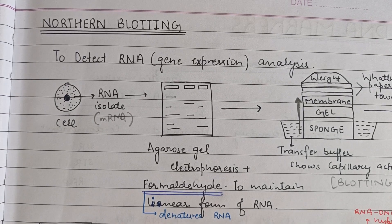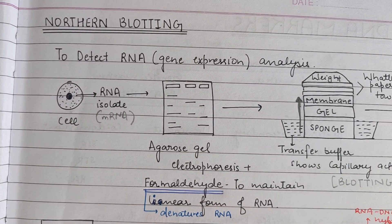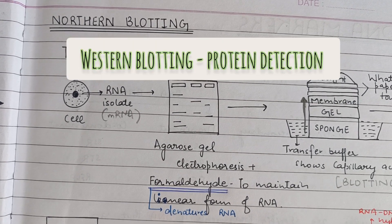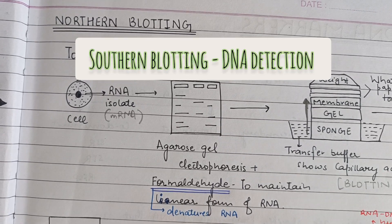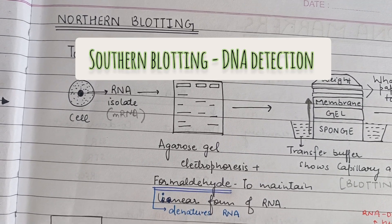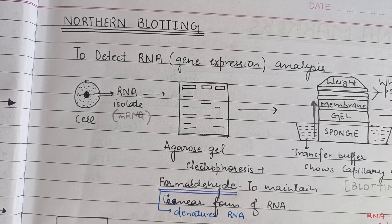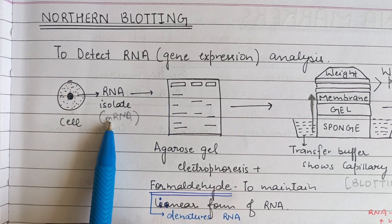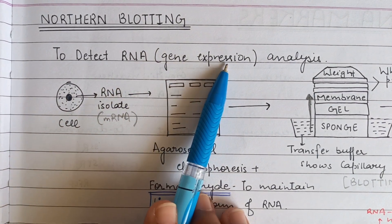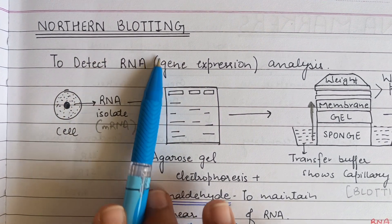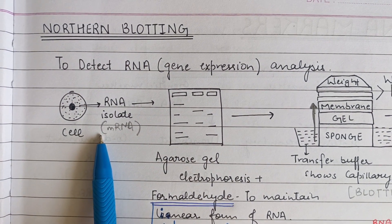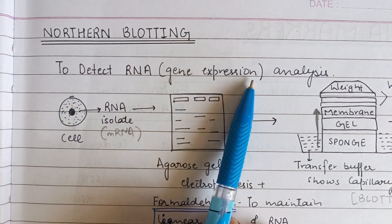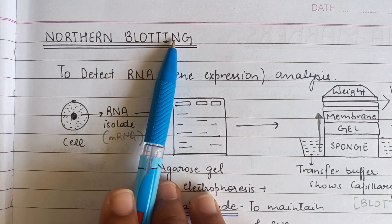In this video we are going to study about Northern Blotting. In the previous video we covered Western Blotting, which is used to detect specific proteins in a sample, and Southern Blotting, which detects specific DNA fragments. Now in this video we will study Northern Blotting, where we detect RNA — mainly mRNA — which helps in gene expression. So basically, detecting gene expression is the purpose of Northern Blotting.